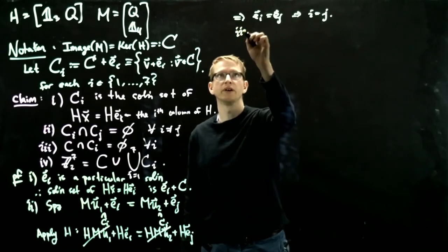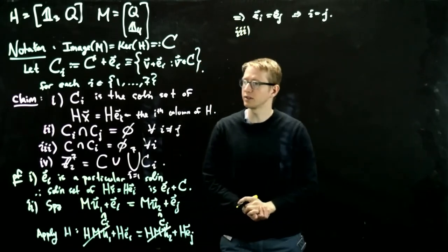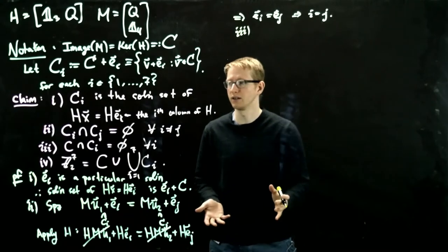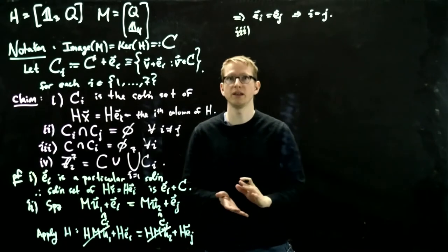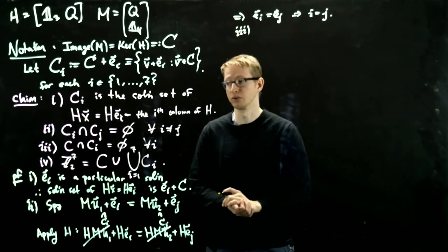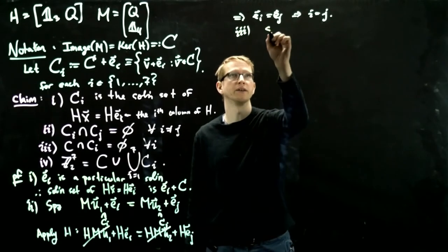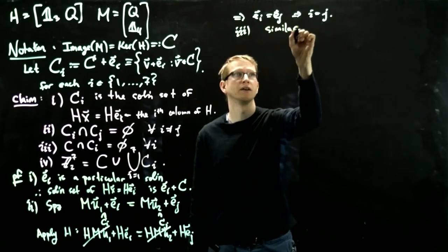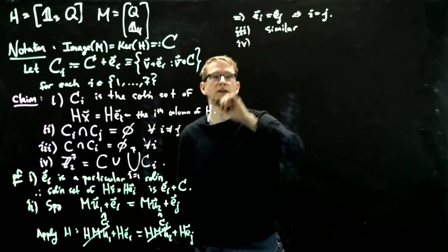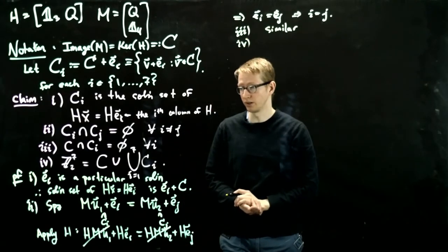So now let's prove the third claim. The third claim says that the homogeneous solution set has no vectors in common with any of these inhomogeneous solution sets. In that case, the argument is very similar. I'll let you think about it.